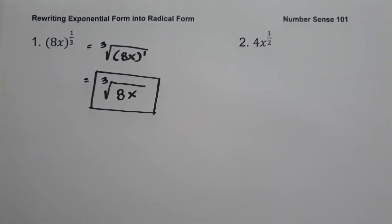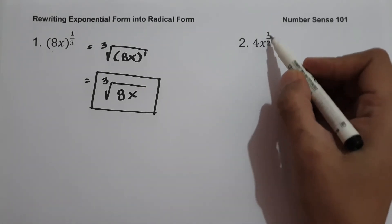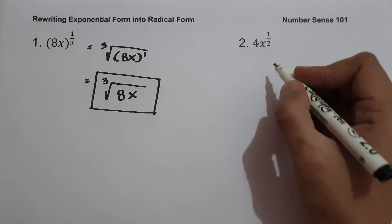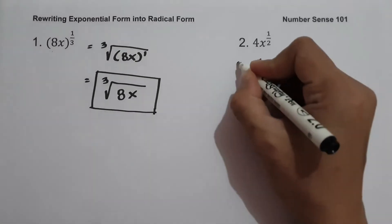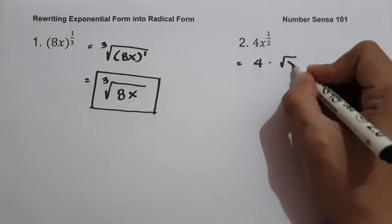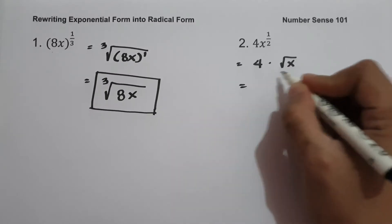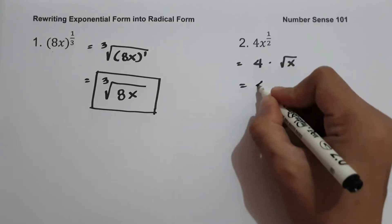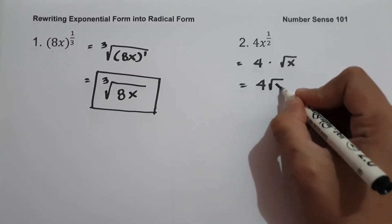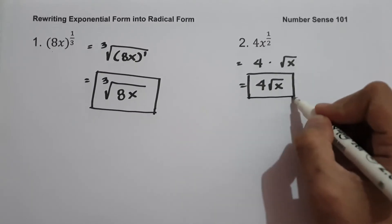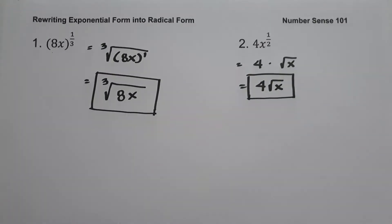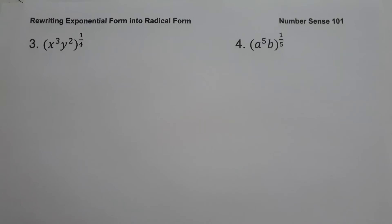On example number two: 4x raised to 1 half. Since 4 is not being raised by 1 half, we can write this as 4 times the square root of x. And if we simplify, that is 4 square root of x. And this will be our answer.